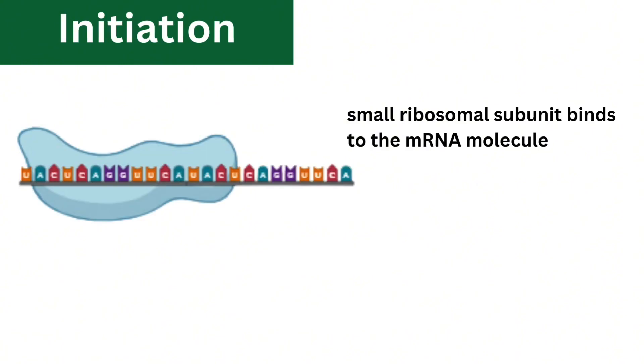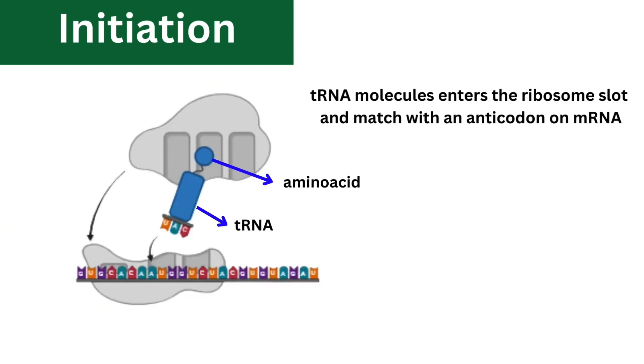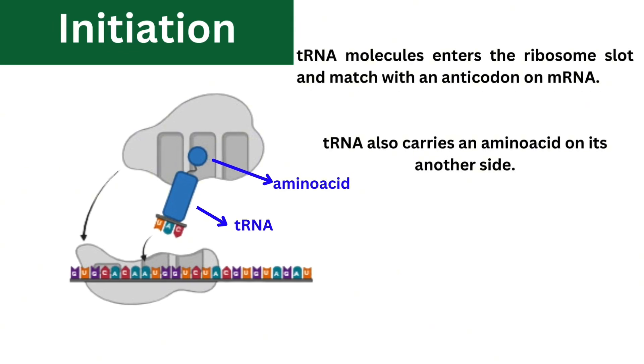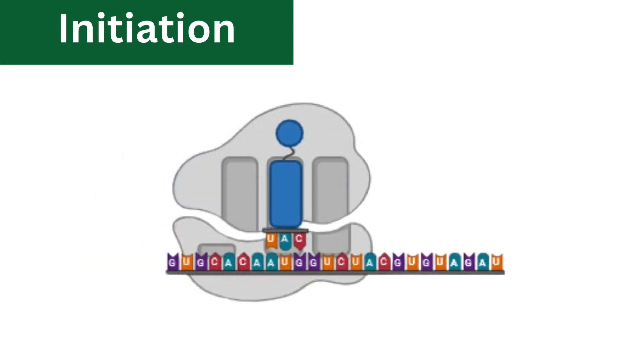During initiation, the small ribosomal subunit binds to the mRNA molecule. The ribosome sequentially reads three-letter codons on the mRNA. Transfer RNA or tRNA molecules enter the ribosome and match with an anticodon on mRNA. tRNA also carries an amino acid on its other side. The ribosome scans the mRNA code until it finds the start codon, which is usually AUG, which codes for the amino acid methionine. This starts the process of translation.